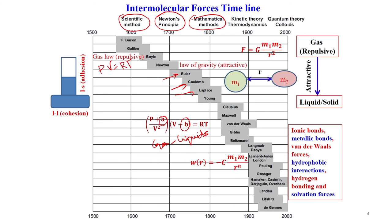In the 20th century, Lennard-Jones potentials and other laws were developed. The potential is defined as a function of the masses of two particles and the distance between them, containing both attractive and repulsive terms.